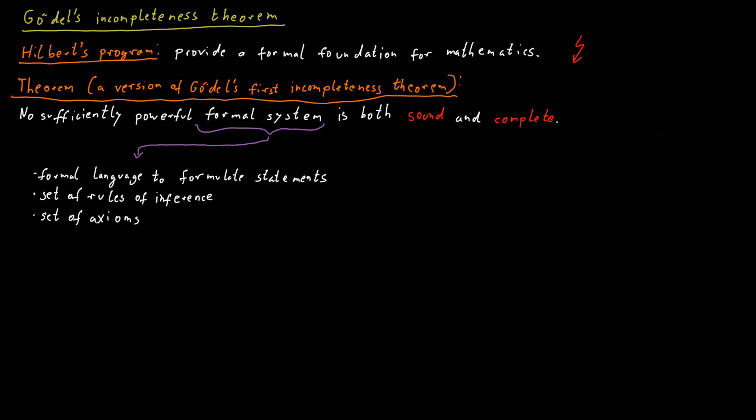So axioms are statements we consider to be true. To prove a statement in a formal system, we repeatedly apply the rules of inference in such a way that the statement is derived from the axioms.